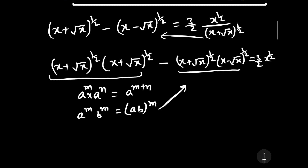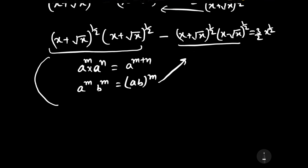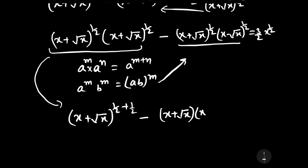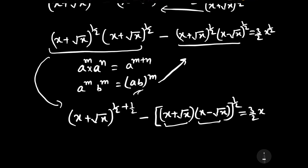Applying these formulas, the equation can be written as: (x plus square root of x)^(1/2 + 1/2) minus (x plus square root of x)(x minus square root of x) to the power 1/2 — since the base is different but the power is the same — is equal to (3/2) x to the power 1/2.